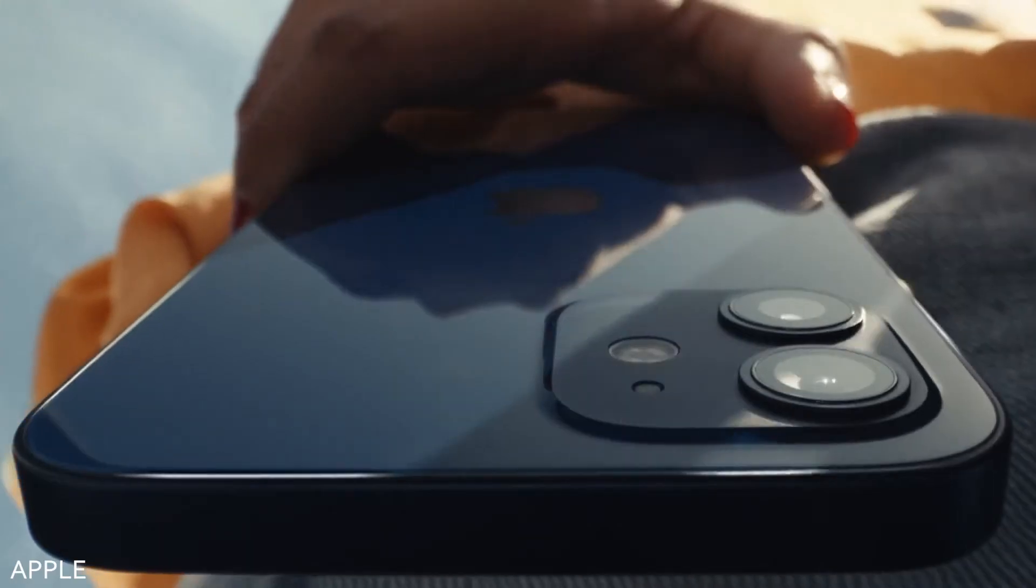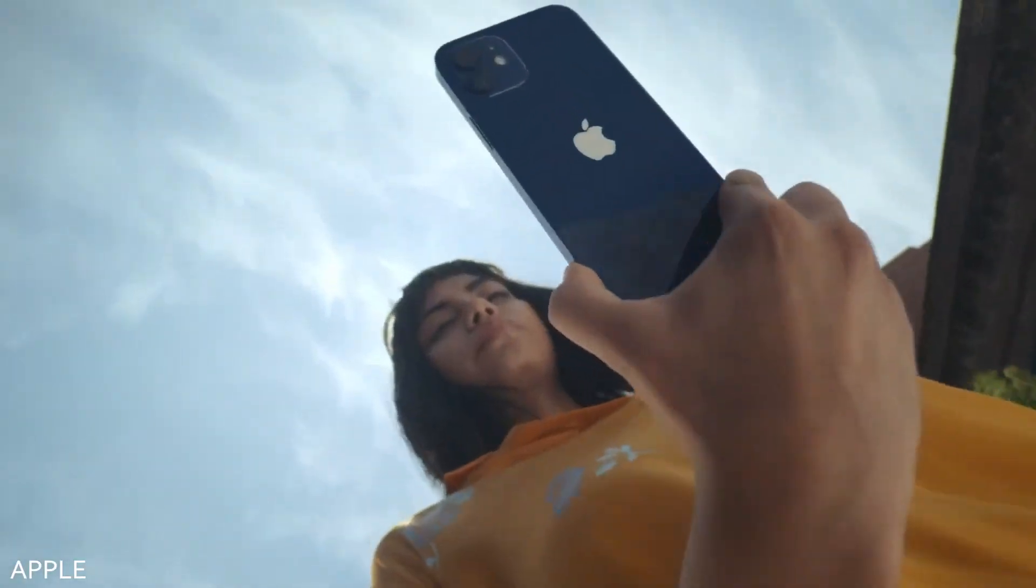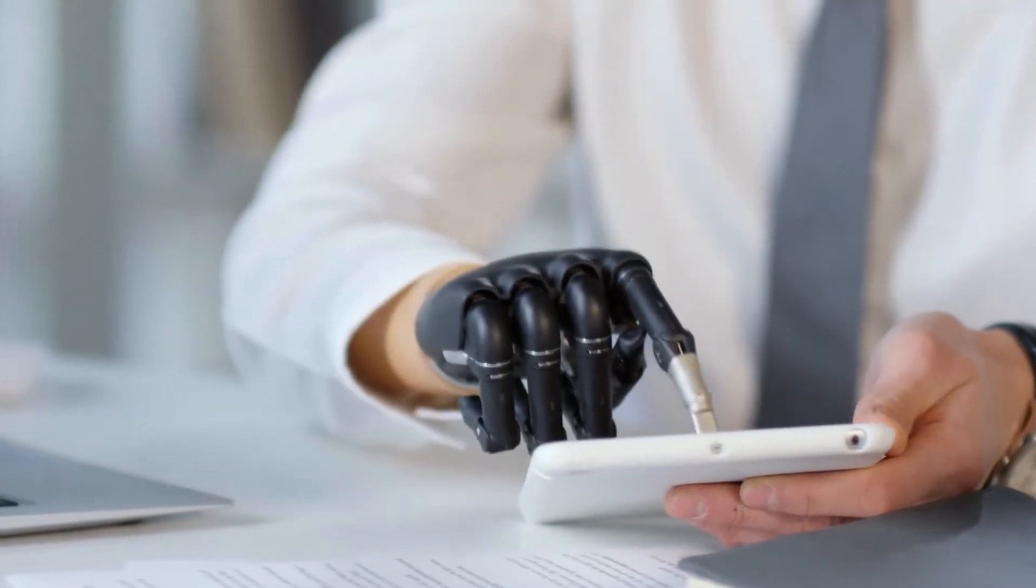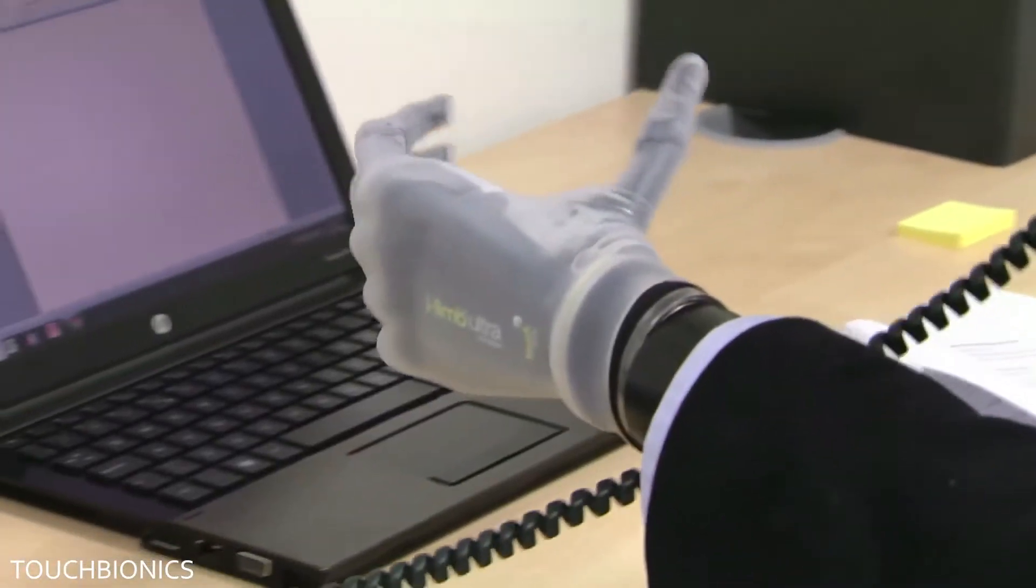Number 10. iLimb. No, it's not another product from Apple. The iLimb is the world's first commercially available bionic hand, released in 2007.